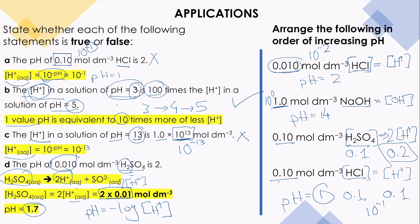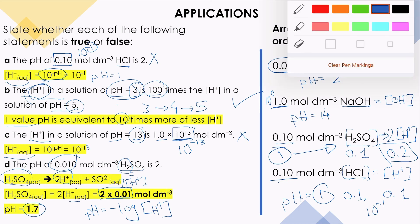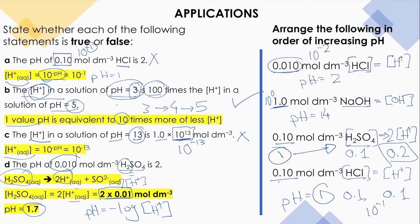So, which solution has the lowest pH? H₂SO₄ at 0.1M has pH less than 1, so it comes first. Then HCl at 0.1M with pH = 1 is second. Then HCl at 0.01M with pH = 2 is third. Finally, NaOH at 1M with pH = 14 is fourth. That is the order of increasing pH.